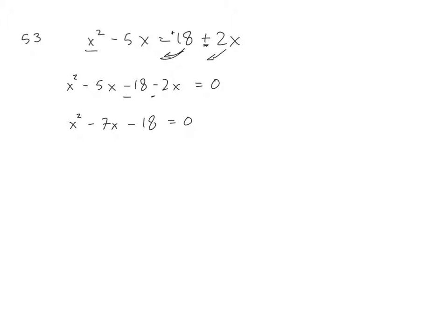Now I can factor. Since there's just a 1 in front of the x squared, I could do the AC method, but it's easier just to look for two numbers that multiply to negative 18 and add to negative 7. So multiply to negative 18, and they have to add to negative 7. So negative 6 times 3, that doesn't add to 7. How about 9 and a negative 2?